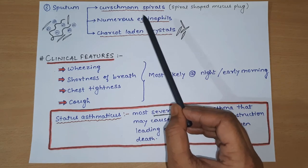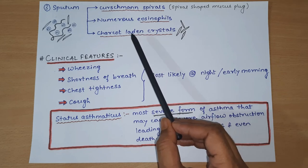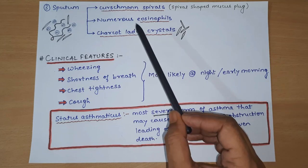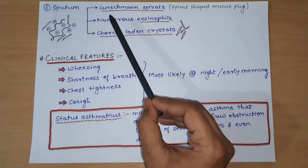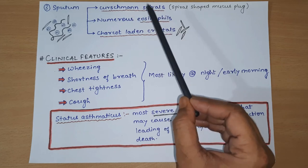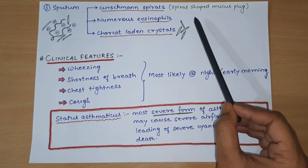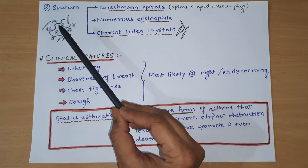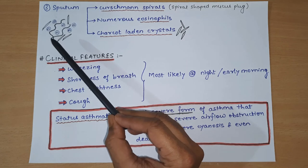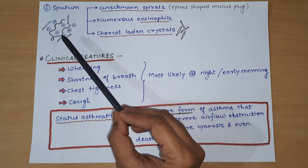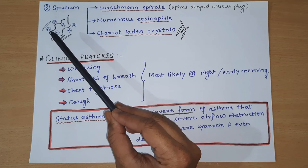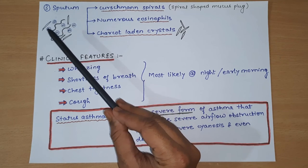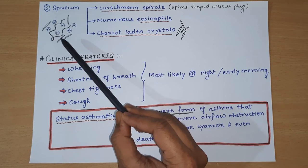Numerous eosinophils are seen because in the late phase, eosinophil recruitment occurs - they reach the airway lumen and appear in the sputum. Curschmann spirals are spiral-shaped mucous plugs - the mucous plug is found arranged spirally, and these spiral-shaped mucous plugs are called Curschmann spirals.